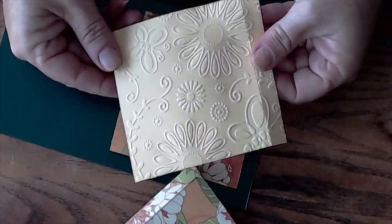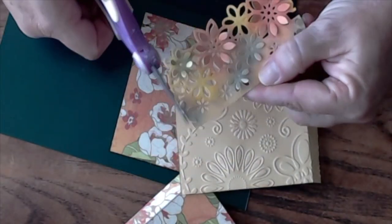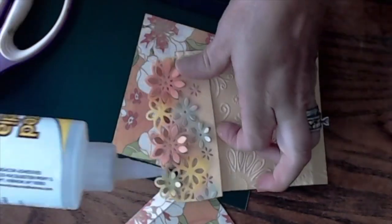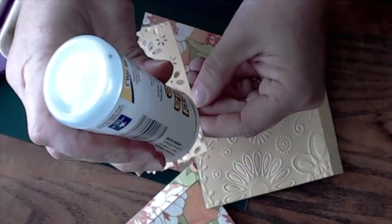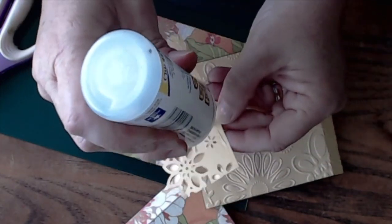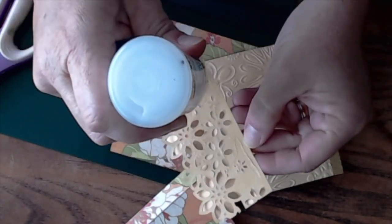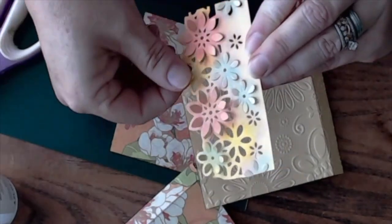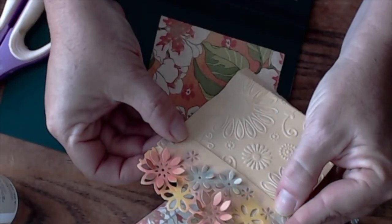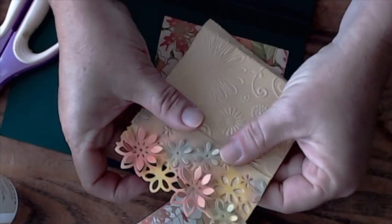Trim the die cut floral borders to four inches and mount to the bottom of the embossed page pieces. Cut small strips of patterned paper, ink the edges, and mount them to cover the edge where the floral border meets the embossed paper. Continue adding pages, mounting the folding edge adjacent to the one prior to it. When finished, you will have a flip-up double-sided set of pages for your photos.